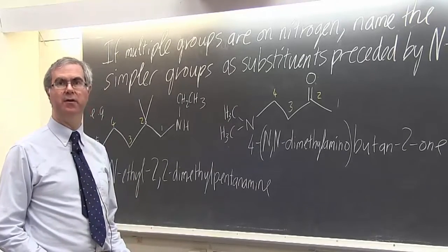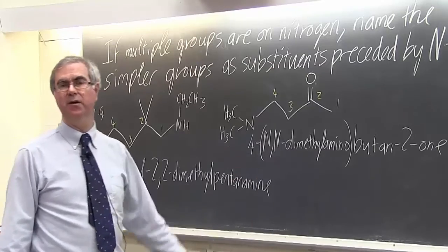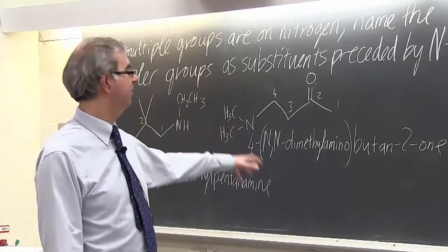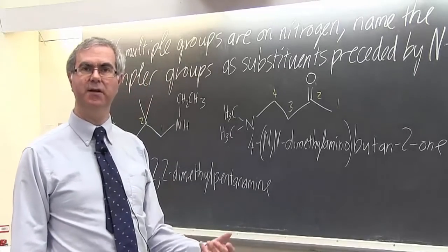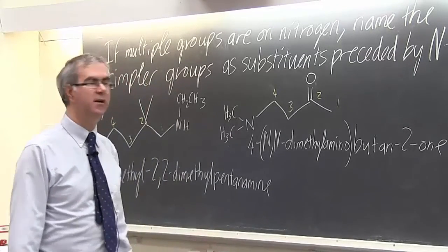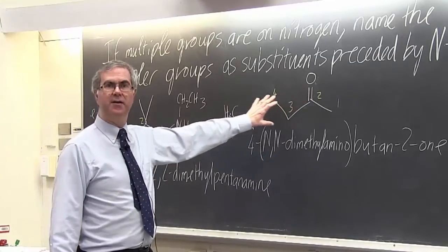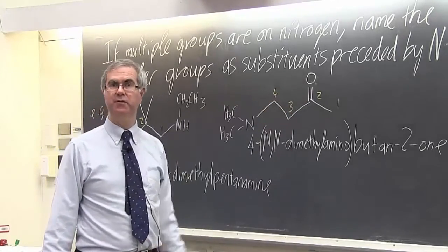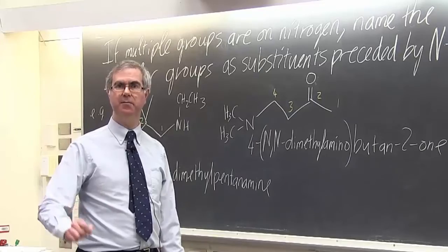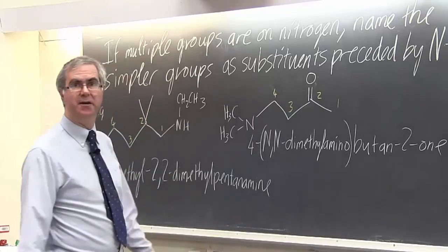Now you can see why organic chemists rarely use these names. They're useful in catalogues and databases. But in fact, if an organic chemist wants to describe this, 99 times out of 100, they'll draw the structure on the board or on a piece of paper. That's how organic chemists communicate.